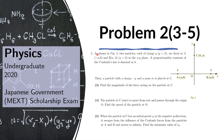Now let's just read the problem again. As shown in figure 2, two particles each of charge q, which is positive, are fixed at A and B. The lowercase a is a positive number and this is in the xy plane. The proportionality constant for Coulomb's law is denoted k. Then a particle with charge negative q and mass m is placed at C. We need to find the magnitude of the force acting on the particle at C.